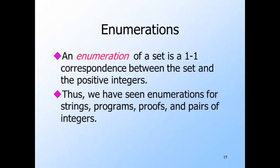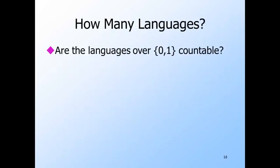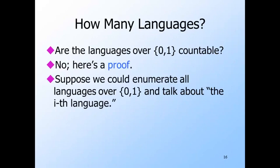We call the one-to-one correspondence between a countable set and the positive integers an enumeration of the set. Thus strings, programs, proofs, and pairs of integers all have enumerations. Now let's look at the set of all languages over some fixed alphabet, say {0,1}. Could this set be countable? The answer is no, and we can prove it. Suppose it were possible to enumerate the languages so every language over {0,1} was the i-th language for some i.